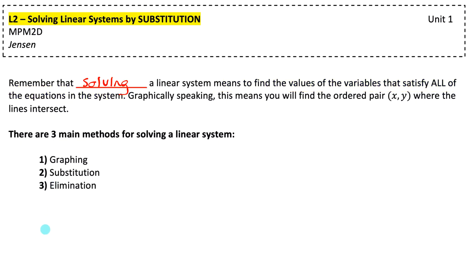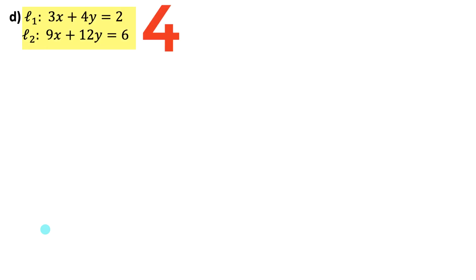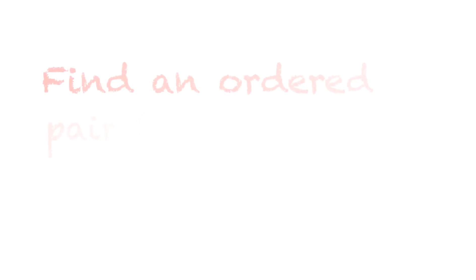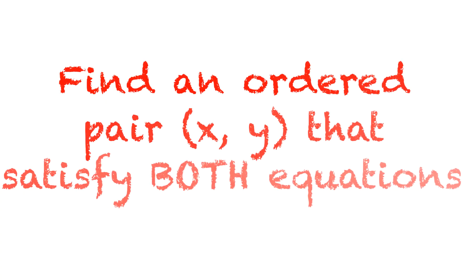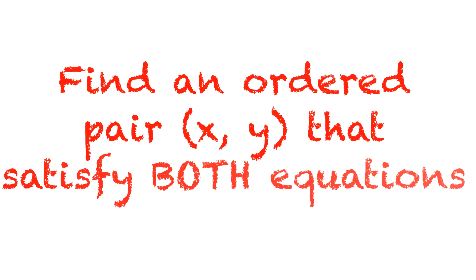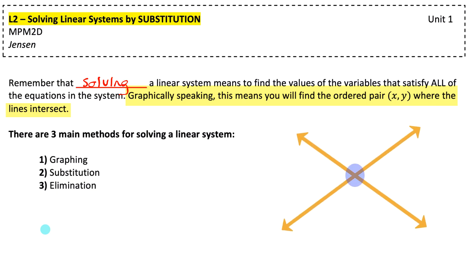We're going to be looking at four different systems of equations. Notice each of those systems has two linear equations. Our job for each is to figure out an ordered pair (x, y) that satisfies both equations. Graphically speaking, we're finding the point of intersection — the point where the lines intersect.